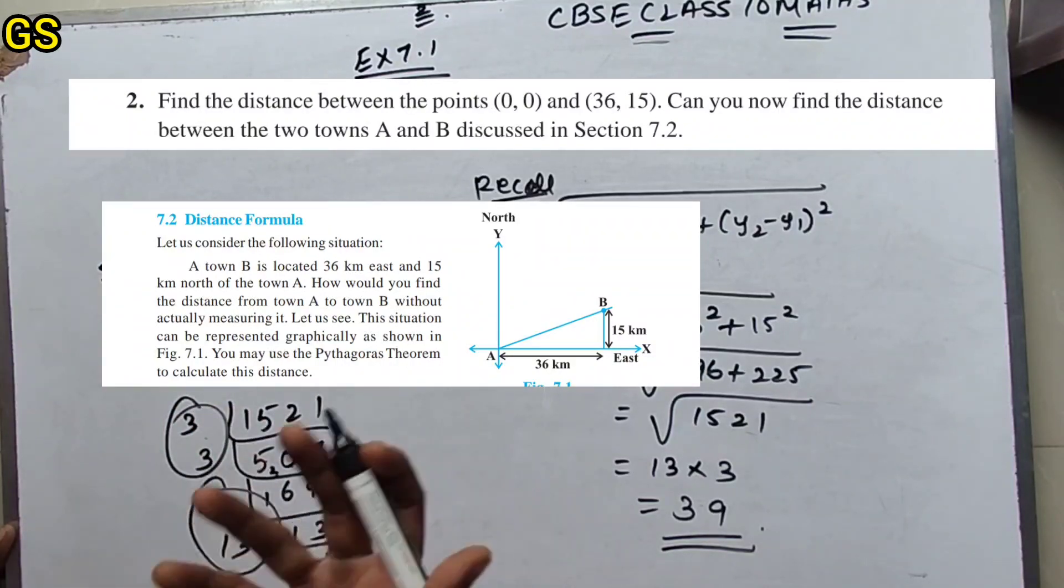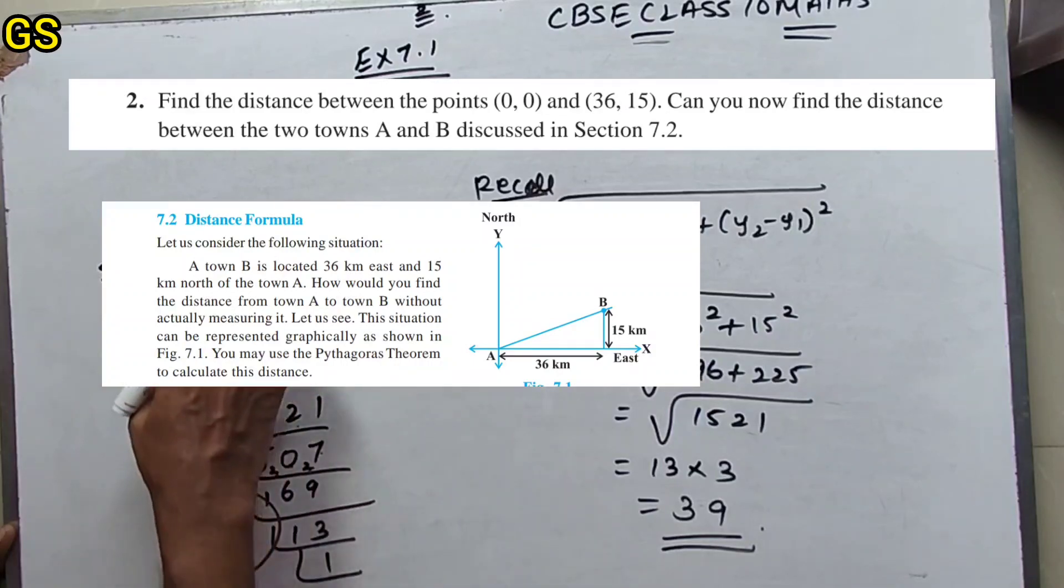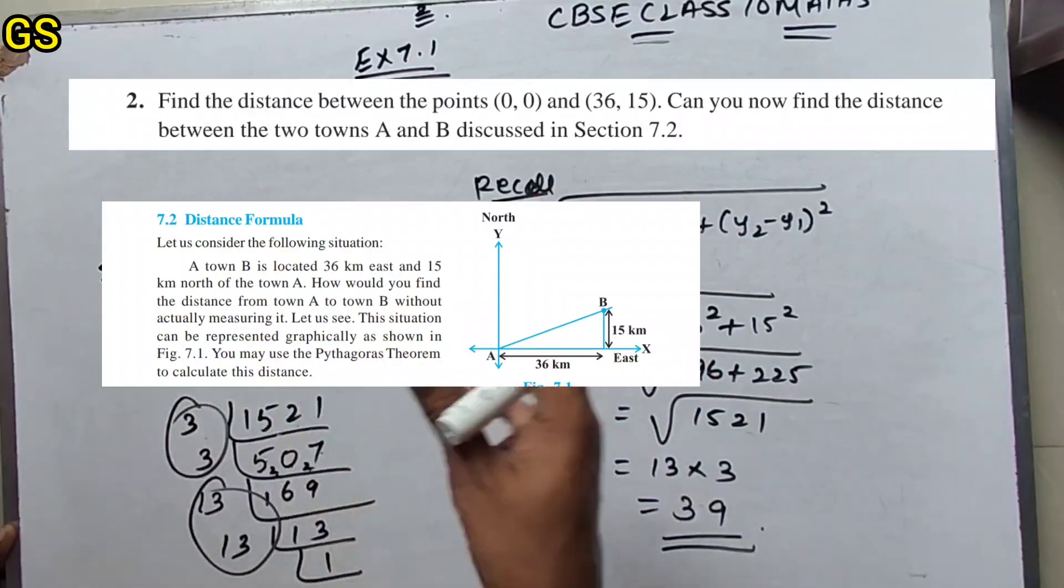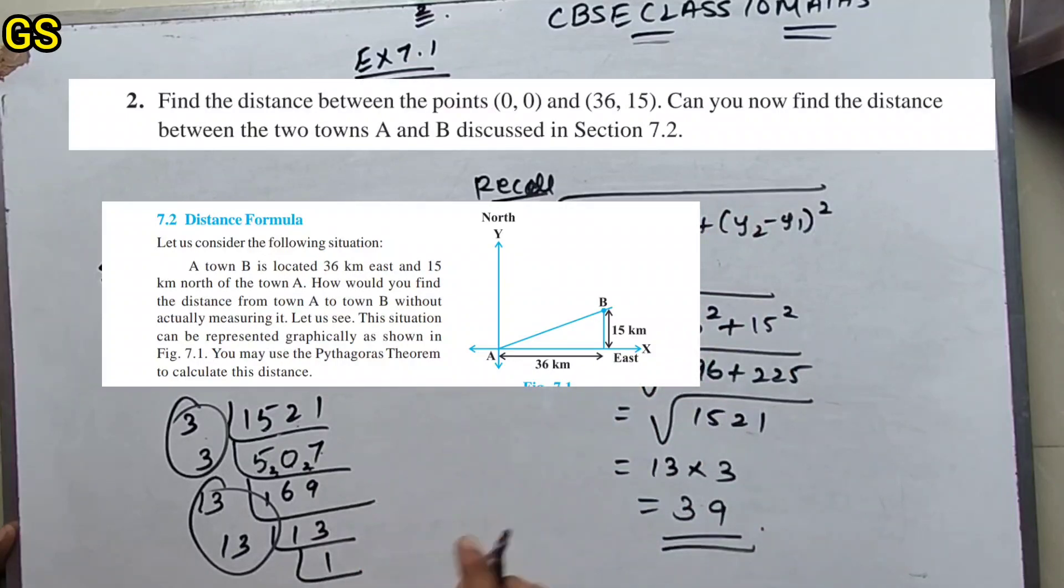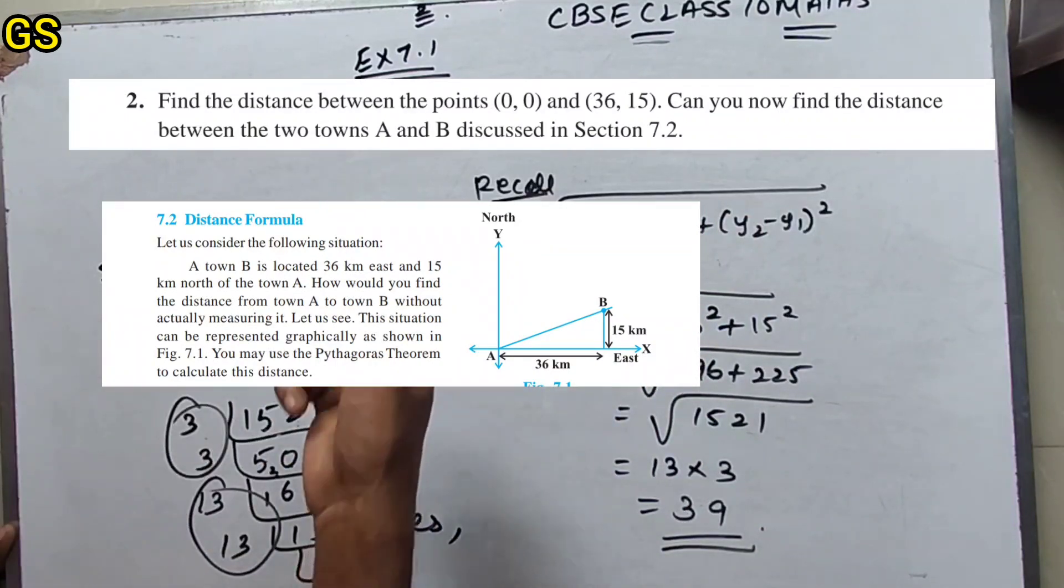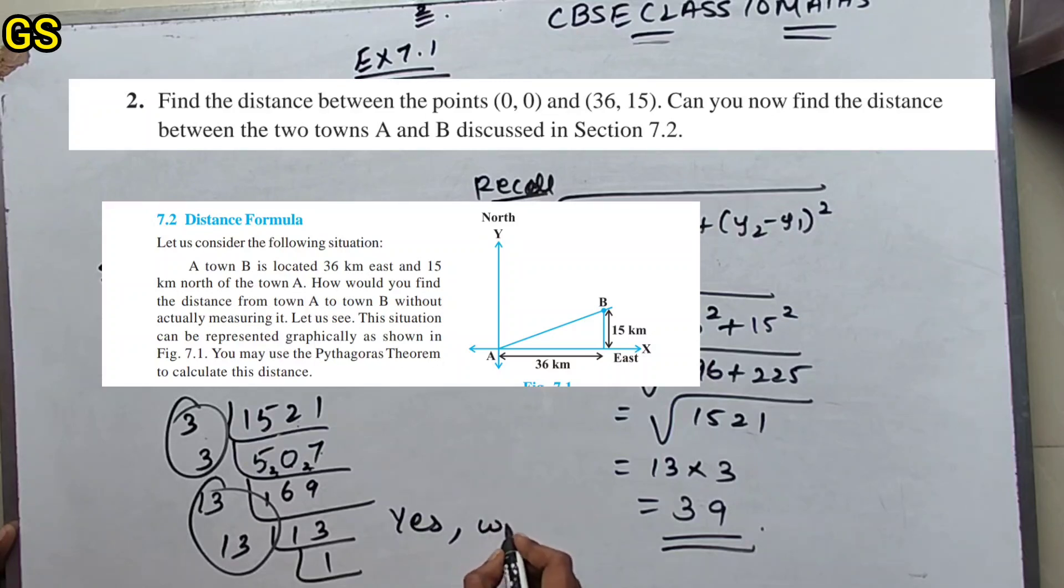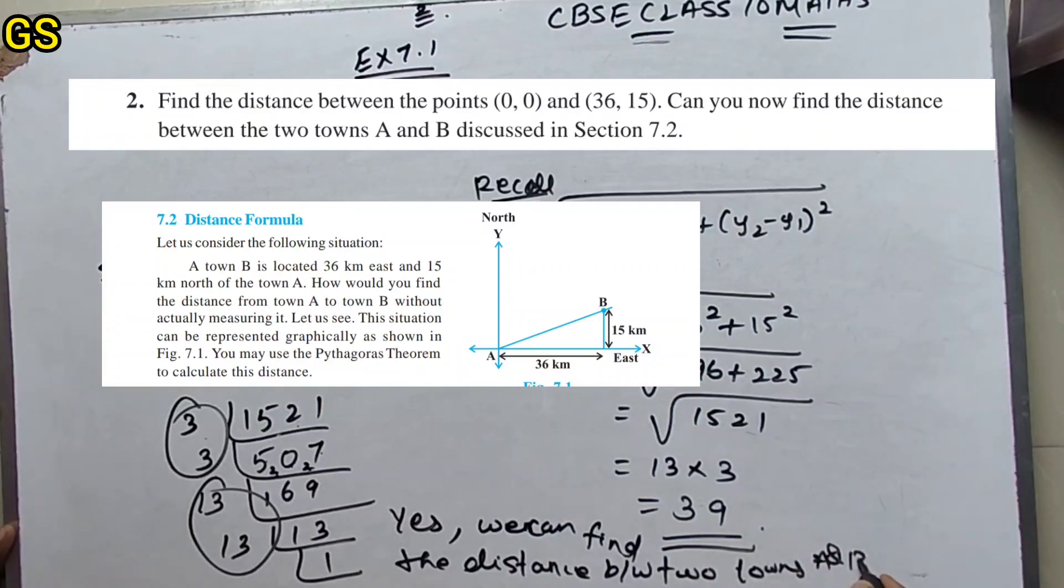The distance between the two towns on the graph with the points. Can you find? Yes, we can find the distance between the two towns A and B.